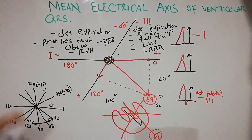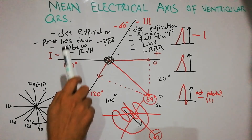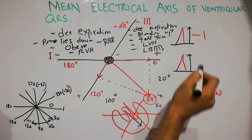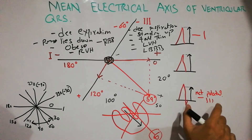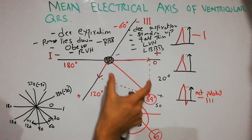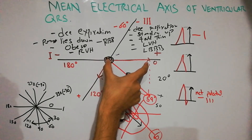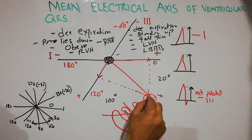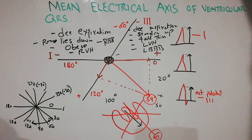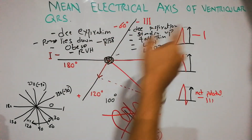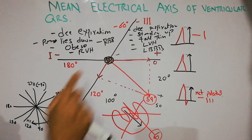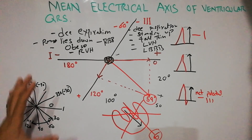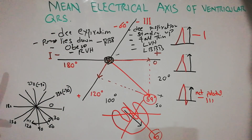To summarize: we can calculate the mean electrical axis of the normal ventricular QRS by taking normal readings of lead 1 and lead 3, subtracting the negative deflection from the positive to get the net potential, plotting those net potentials on the bipolar limb leads, and drawing perpendicular lines. The point where they intersect gives the positive direction of the mean electrical axis, and the point where lead 1 and lead 3 intersect gives the base or negative side. Thanks for watching.